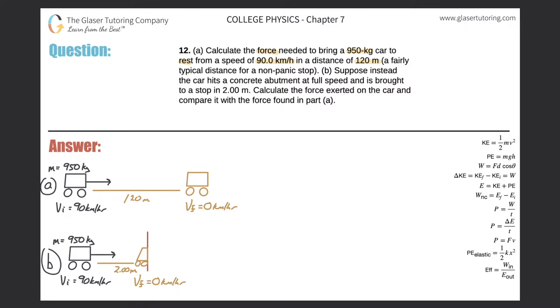Here we have detailed letter a. We have a car, 950 kilograms, initial velocity of 90 kilometers per hour, and it travels 120 meters as it comes to rest after traveling those 120 meters.